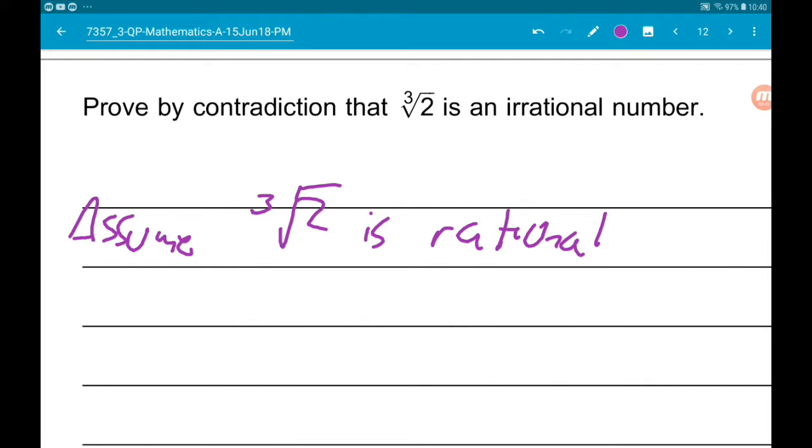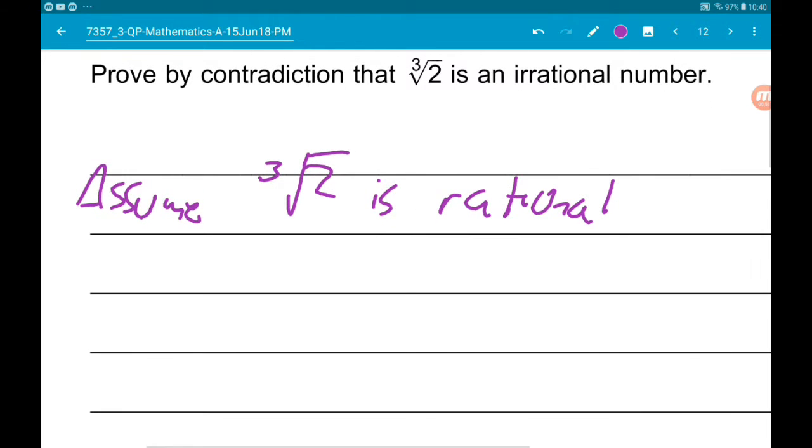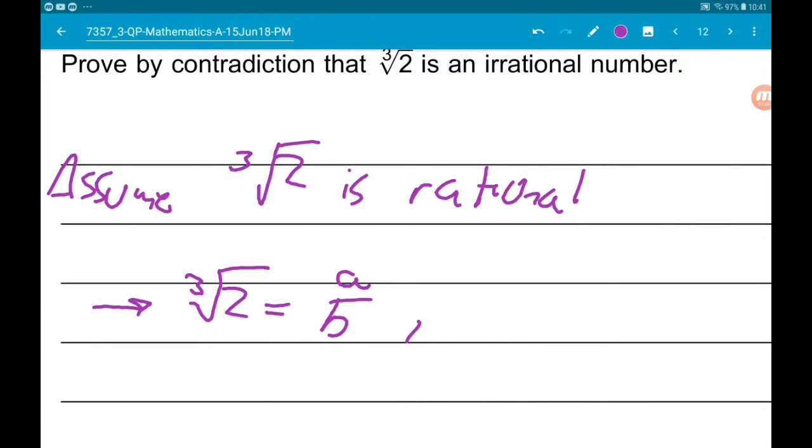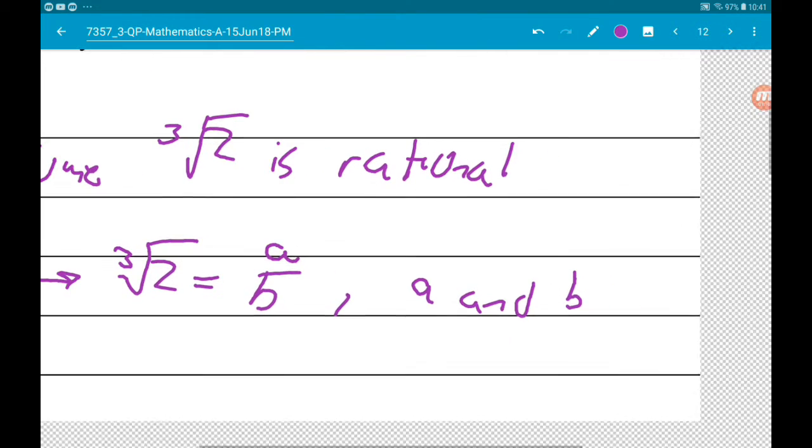If a number is rational, it can be written as a fraction of two integers. That would mean that the cube root of 2 equals a over b, where a and b are integers.